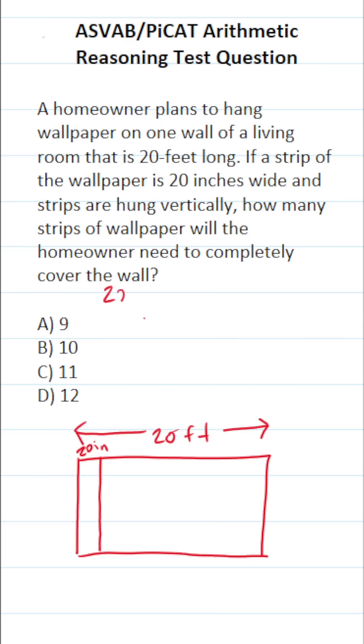We're going to take the length of the wall, which is 20 feet, and we're going to divide it by the width of each piece of wallpaper, which is 20 inches. And that will tell us how many of these strips of wallpaper we're going to need to put on this wall to completely cover it.